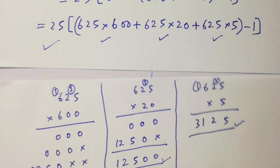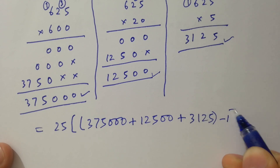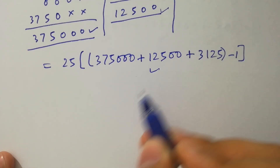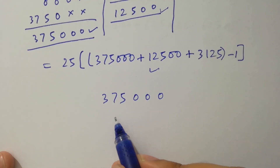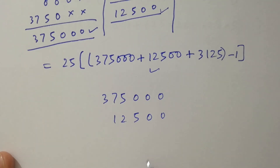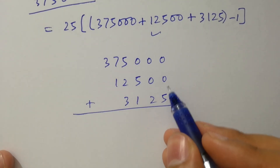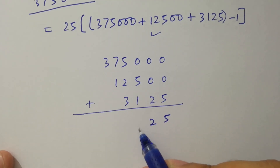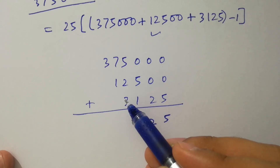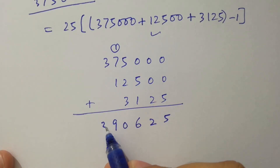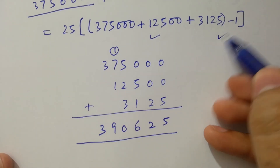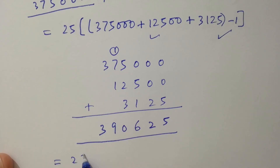Subtracting 1, and in the next step adding the terms: 375,000 plus 12,500 plus 3125. Adding them: 5, then 2 plus 1 is 6... wait — 5, 7 plus 2 is 7, 7 plus 3 is 10 carry 1, 8 plus 1 is 9, 9, and 3. So the sum is 390,625. Then 25 times 390,625 minus 1.